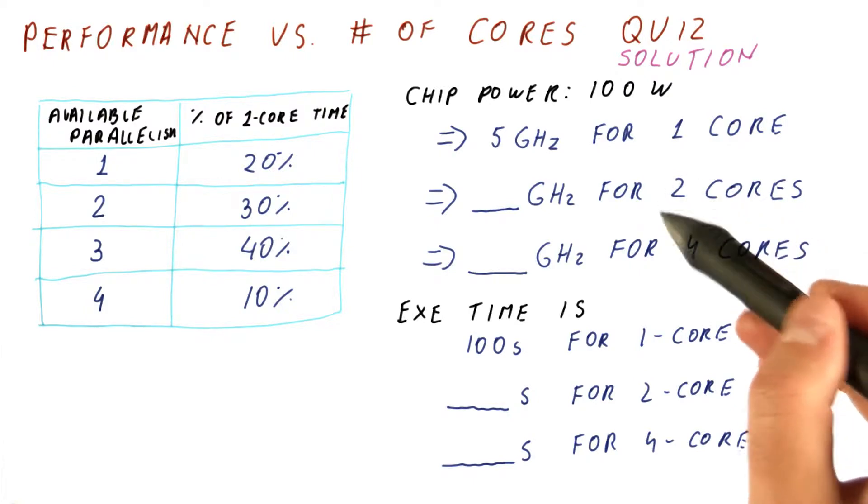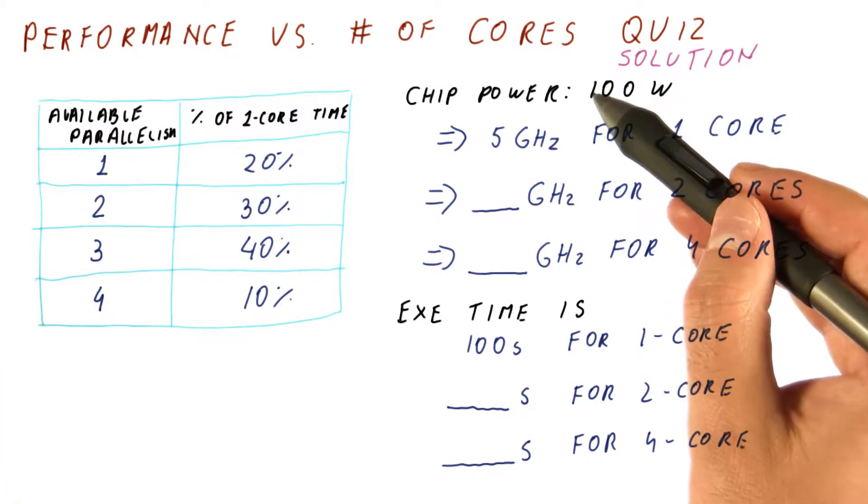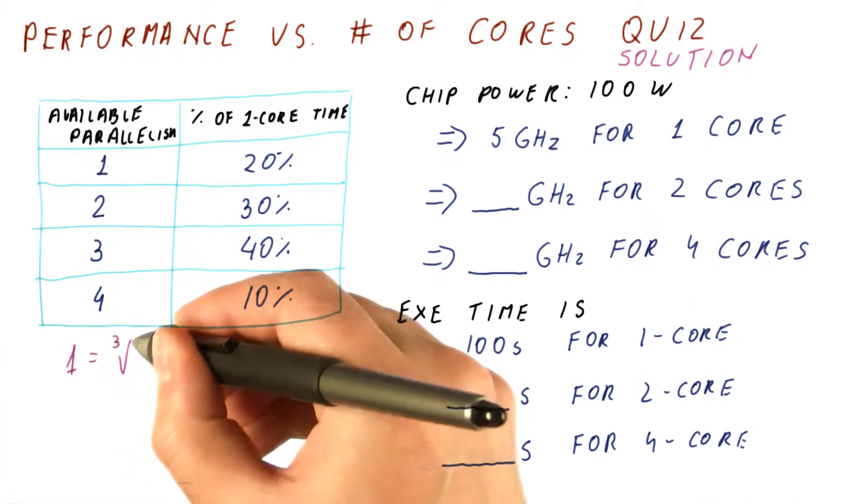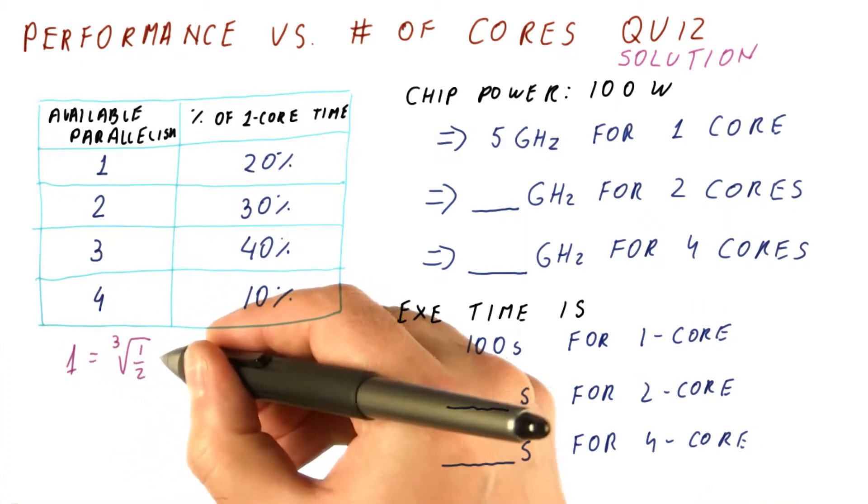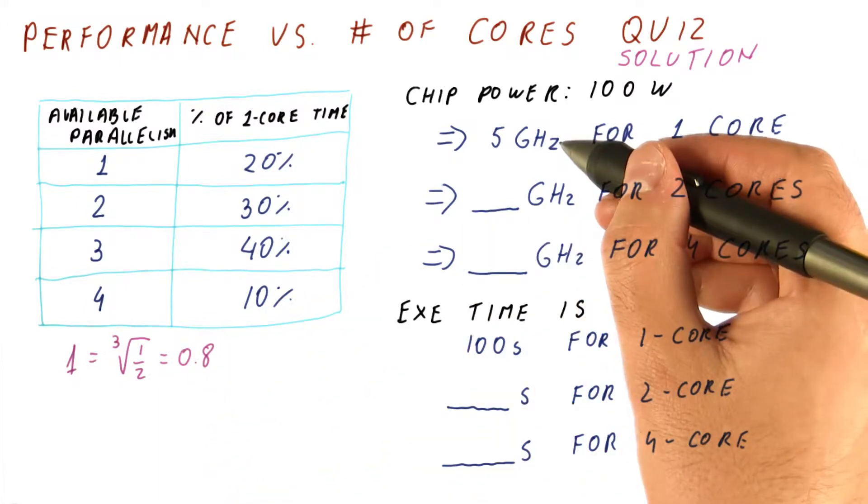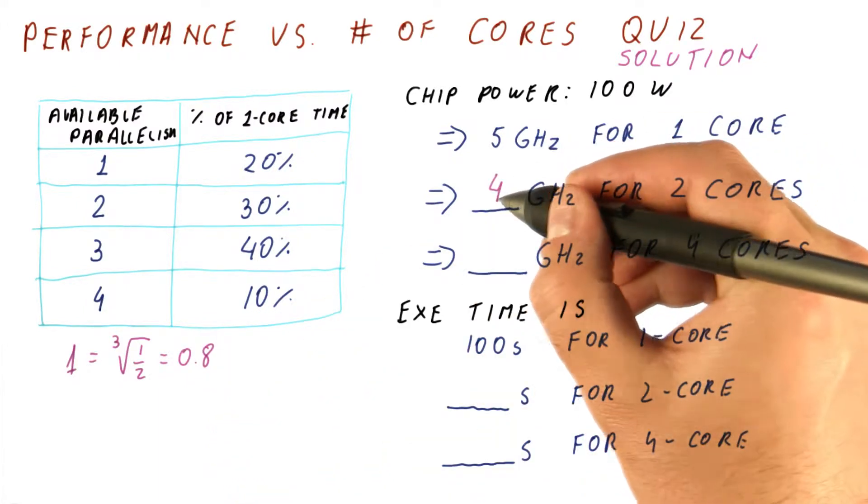The answer is that each of the two cores now gets 50 watts. That's half the power. The frequency in that case is going to be the cubic root of that one half, or 0.8 times the original frequency, so we get 4 gigahertz here.